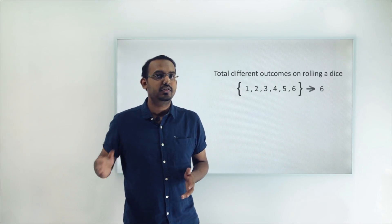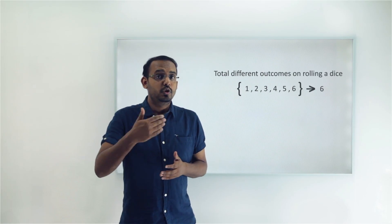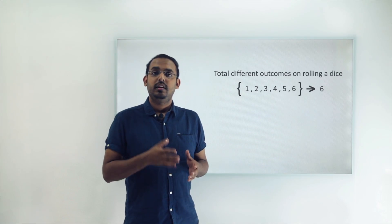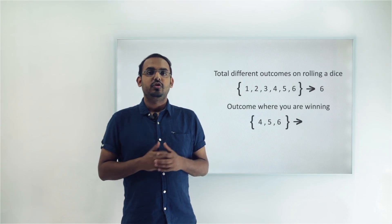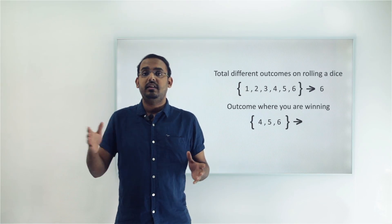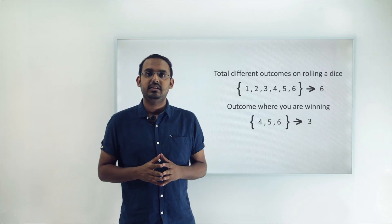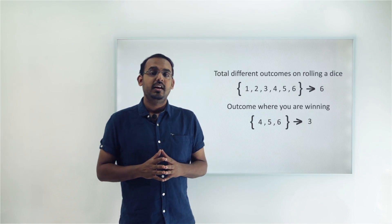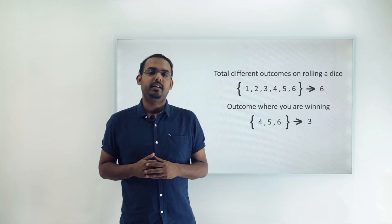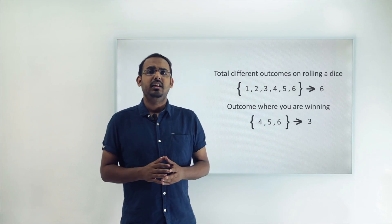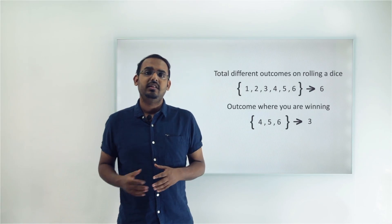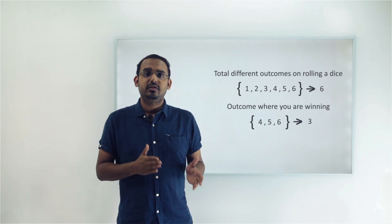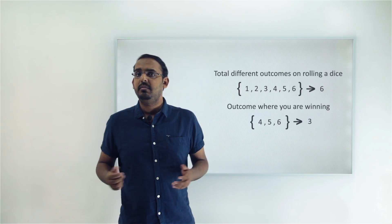Let's analyze this step by step. When you roll the dice there are 6 different possible outcomes — you can get any number from 1 to 6. You will win only if you roll a 4, 5, or 6. Out of the 6 different outcomes, there are 3 outcomes that lead to you winning the game. So there are 3 out of 6 different ways in which you can win — the chances of winning are 3 out of 6.